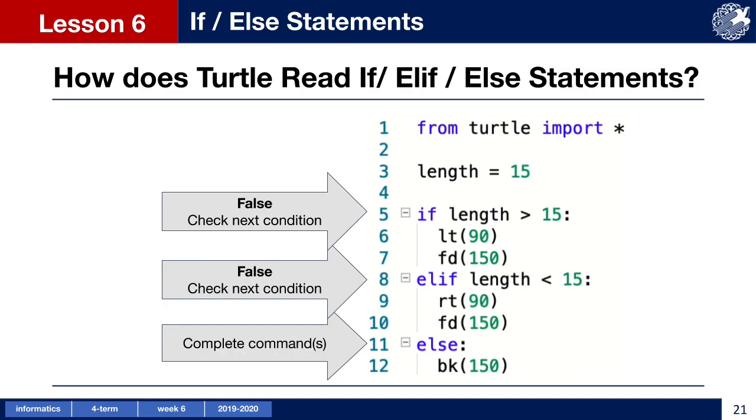When our length value is set to 15, the turtle checks the first condition to see if the length is more than 15 and finds it false. So it moves to the next condition. It finds this condition false as well, so it moves to the next condition. After checking all other conditions and finding them all false, the turtle completes the command found beneath the else block and completes backward command.